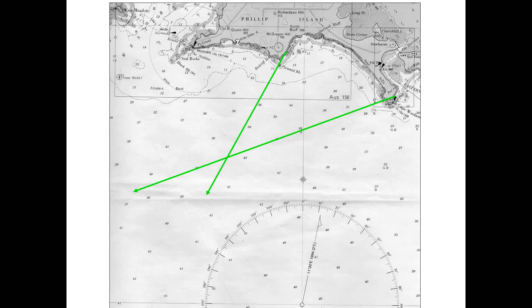The position becomes more accurate if you obtain three or more position lines and can find their intersection. The position is most accurate when the fixed objects or lighthouses are located as wide apart as possible. Normally, they should be at least 45 degrees apart from each other, because that gives you a good angle of cut. When bearing lines come from widely located objects at 45 degrees or more, you get a good cut, showing the position is quite accurate.